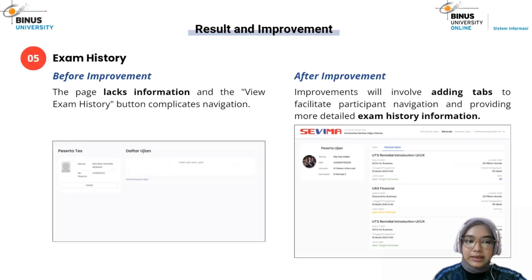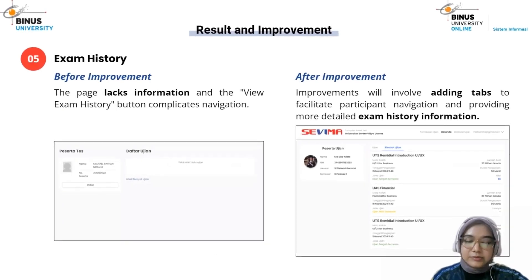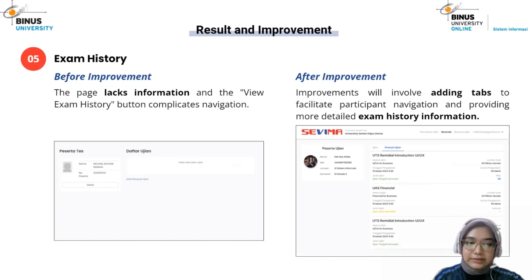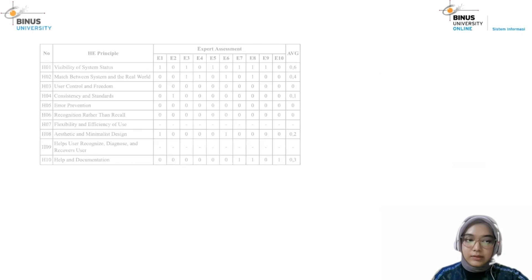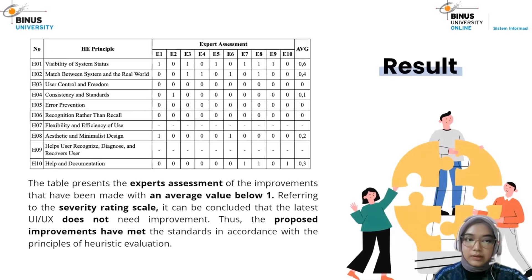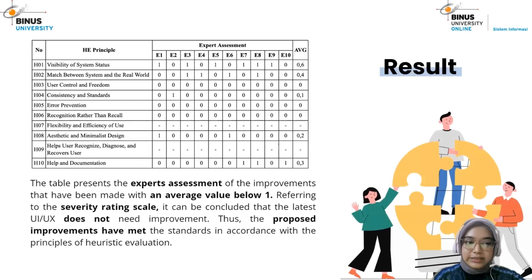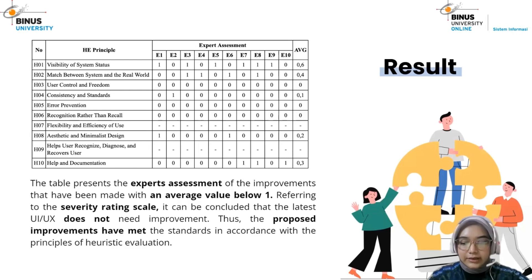Last is the exam history page. Currently there is no button available to show exam information. The improvement is to add a button that lets users view their exam history. Following the prototype improvements, experts gave an average severity rating below 1, indicating the improvements have met the standard of heuristic evaluation based on severity ratings.